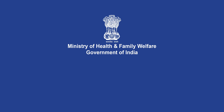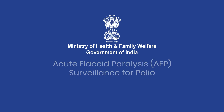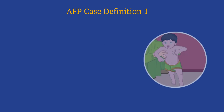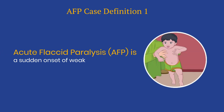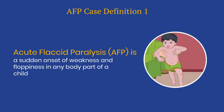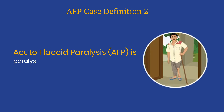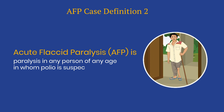In this video, we will learn about the acute flaccid paralysis surveillance for polio. Acute flaccid paralysis is a sudden onset of weakness and floppiness in any body part of a child less than 15 years of age, or paralysis in any person of any age in whom polio is suspected.